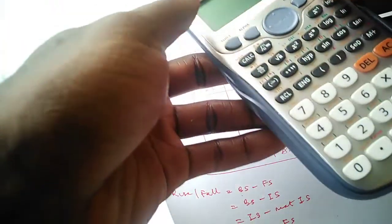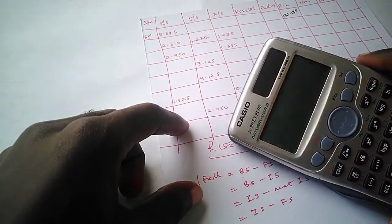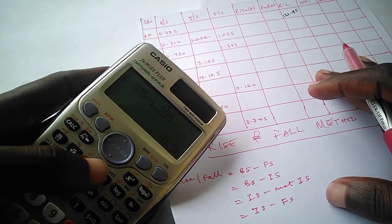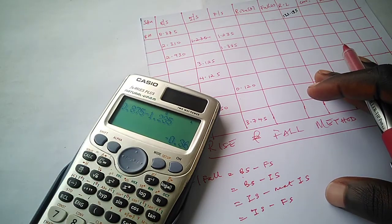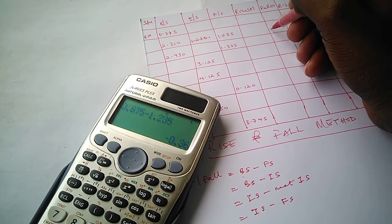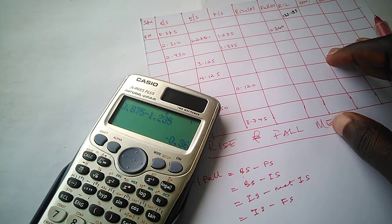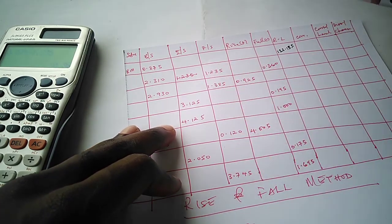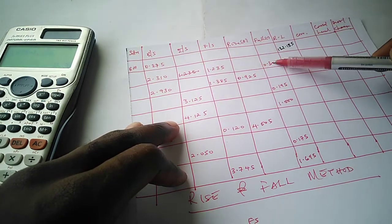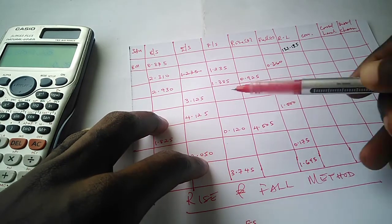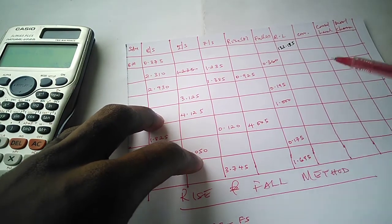Let's calculate. Starting with 0.875 minus 1.235 gives −0.360. Since the value is negative, it is recorded under fall as 0.360. We continue this procedure — backsight minus foresight, backsight minus intermediate sight, and so on — for all observations until the last. Each result is placed under rise if positive or fall if negative. These are the rise and fall values for this particular problem.